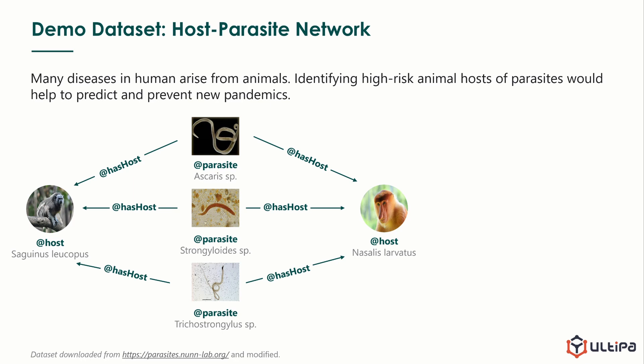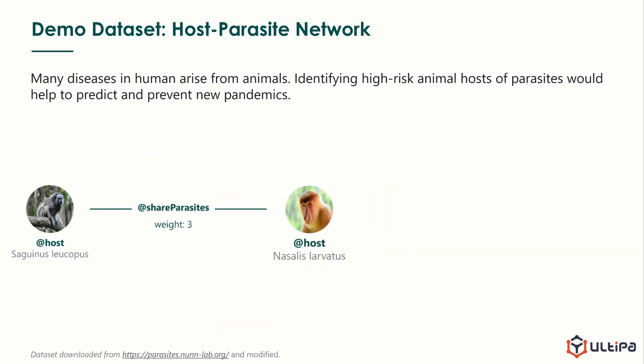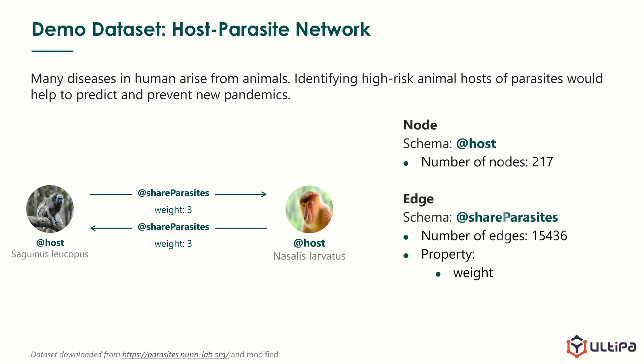We model the graph like this. For each two animals, if they have any parasite in common, we link them together and record the number of common parasites as weight. In Ultipa graph, every edge must have direction. But share parasites is a bilateral relationship. So we insert two edges of different direction but of the same weights between every pair of hosts that share parasites. In this way, we build a graph with 217 host nodes. They are all primates to be specific.